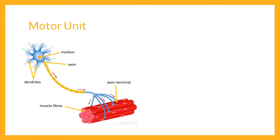A motor unit is a motor neuron and all the fibres that that motor neuron innervates — all the fibres attached to that motor neuron that contract when a sufficient electrical impulse arrives. For our purposes today, we're talking about contraction of the muscle fibre. The first thing to remember is that an electrical impulse is sent along the neuron, and that nerve impulse arrives at what's known as the neuromuscular junction.